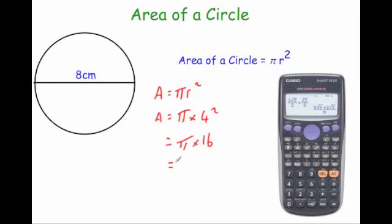And then on your calculator, just work that out. So pi times 16 is equal to 50.265 and so on. And then just rounding it to one decimal place would be 50.3 centimeters squared to one decimal place.